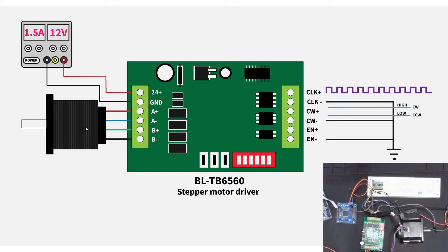On the input side we have clock-plus and clock-minus; all the minuses connect to ground and the plus carries the clock pulse. If the frequency is too high, the excitation will be too quick and the motor may stall; if it's too slow the motor rotates very slowly. You need to choose the pulse frequency according to your application.